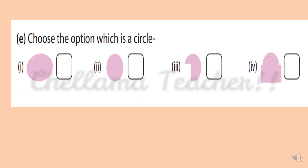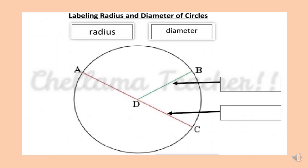Choose the option which is a circle. Here 4 options are given with 4 different shapes. Among those, option 1 is the circle. Next question: labeling radius and diameter of the circle — radius and diameter. Two things are given here and a circle picture is also given.